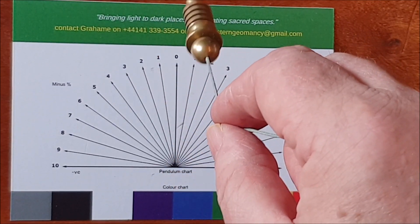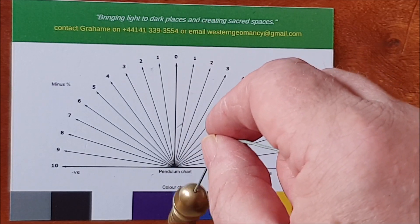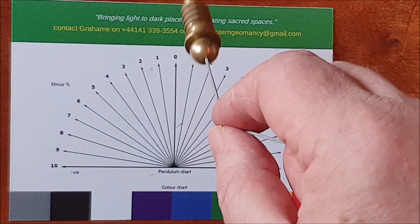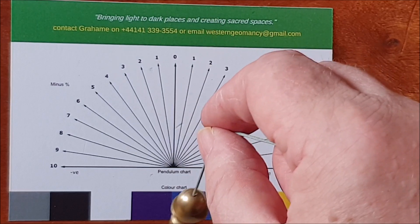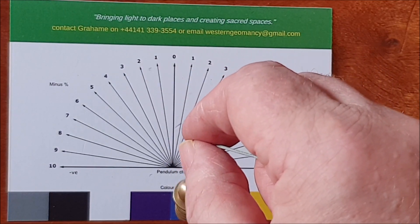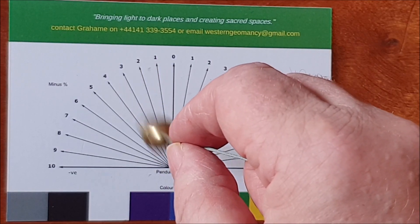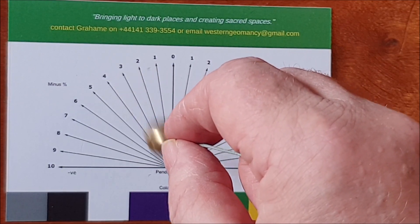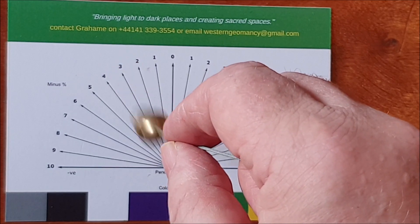If I put it back to zero again and supposing I had a quality of water that wasn't very good, I'd say please show me the quality of this sample of water and the pendulum would start going down to the left hand side indicating that it was impure. I'm getting minus three here or minus thirty percent.